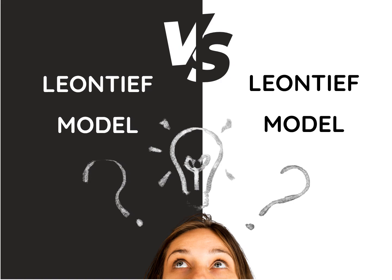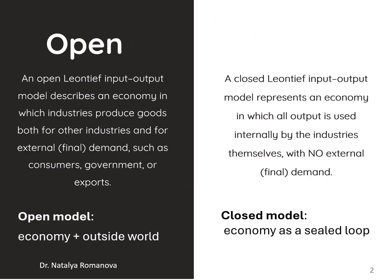There are two main versions: the Open Model and the Closed Model. In the Open Model, we focus on production sectors and include a separate final demand vector. This represents household, export, and other external consumers. It answers the question, how much should each sector produce to meet external demand?